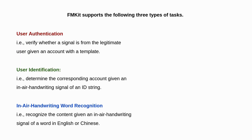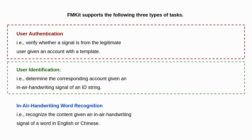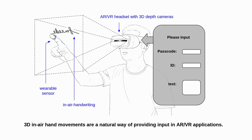Currently, FMKit can support the following three types of tasks: user authentication, user identification, and in-air handwriting word recognition, which correspond to the three types of input information in this scenario.